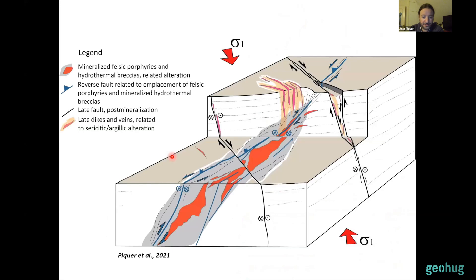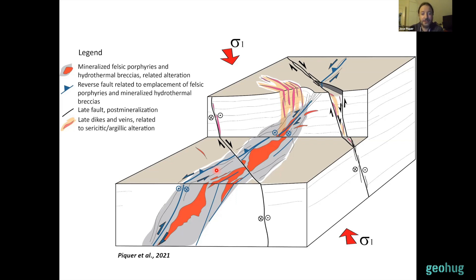Based on all of this we propose a model for the structural controls on the emplacement of Andean porphyries, in which felsic porphyries, related mineralization, and large hydrothermal breccia complexes are related to misoriented faults showing fault valve behavior — allowing for the accumulation of large reservoirs of differentiated magmas and large amounts of volatiles at depth — which are then violently released along these faults, leading to the catastrophic formation of these large mineral deposits. All the late veins and dikes are emplaced through the more favorably oriented faults more parallel to sigma one.